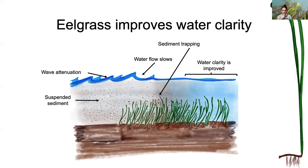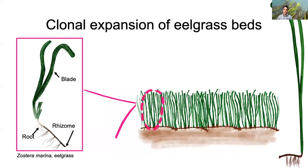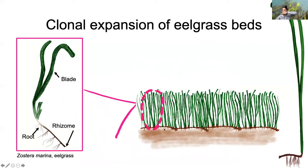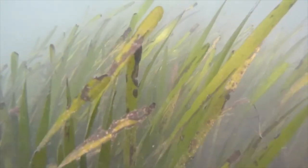Eelgrass grows clonally mainly, and that clonal expansion is through rhizomatic growth. You have a horizontal modified stem called a rhizome that little roots extend down from, and a blade or shoot of photosynthetic material that grows vertically. As you can see in this cartoon, the horizontal rhizome lays flat, and from it blades or shoots continue to grow out one after another, giving large expansion.